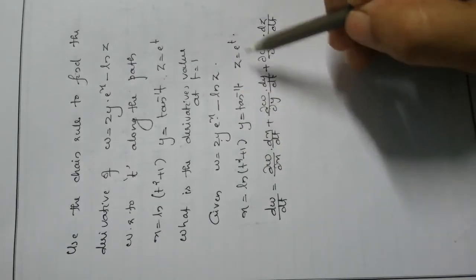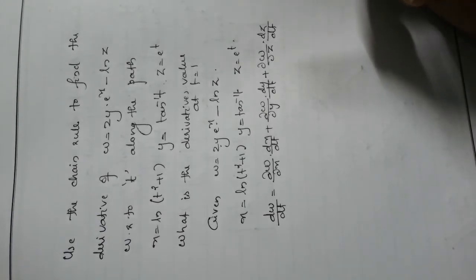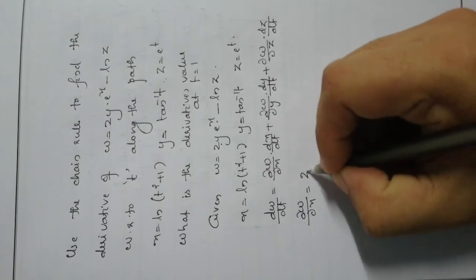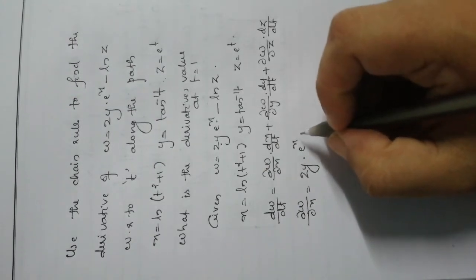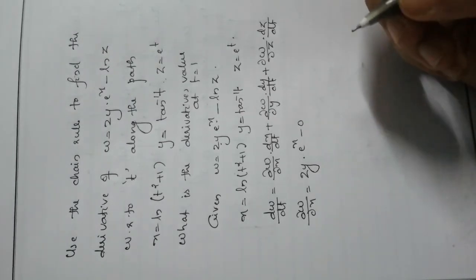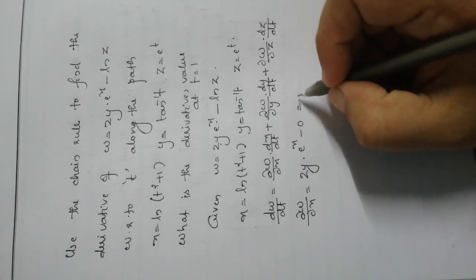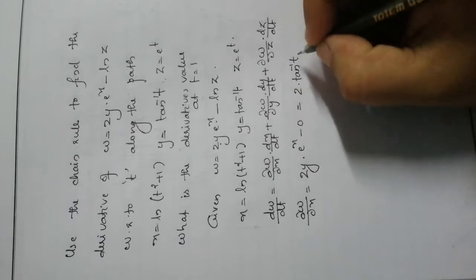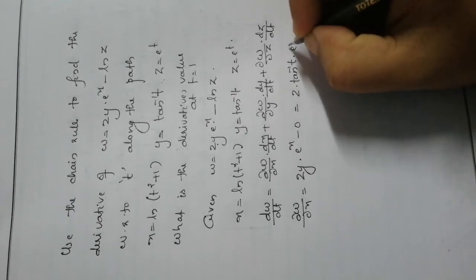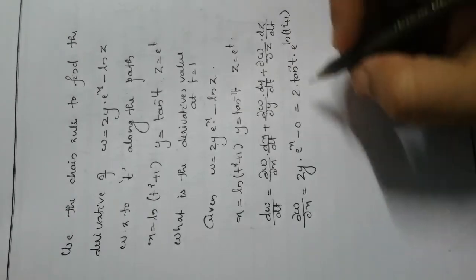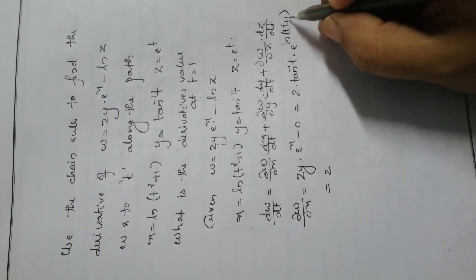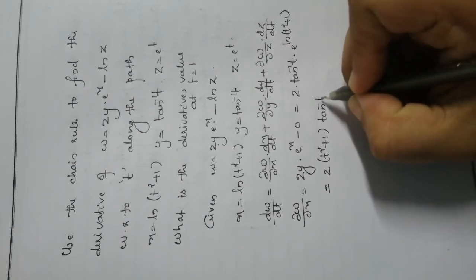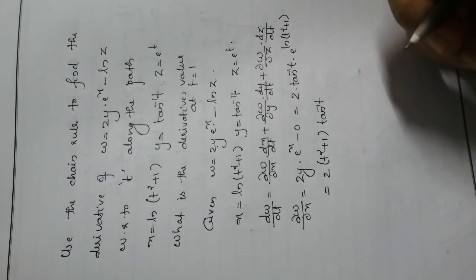Since w is a function of x, y, z and x, y, z are functions of t, we apply the formula. First, ∂w/∂x: treating y as constant, the derivative of 2y·e^x with respect to x is 2y·e^x. Substituting x = ln(t² + 1), we get 2·tan⁻¹(t)·e^(ln(t²+1)) = 2(t² + 1)·tan⁻¹(t).